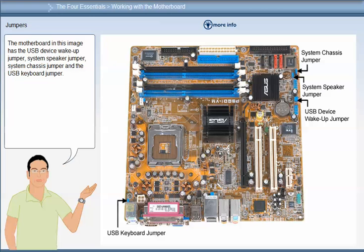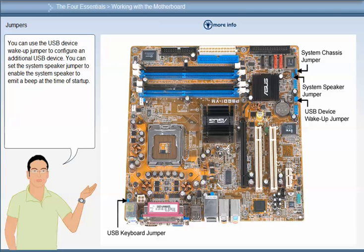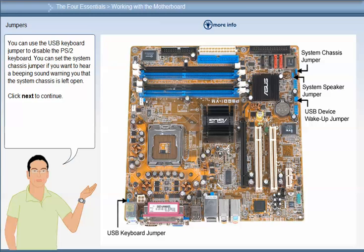The motherboard in this image has the USB device wake-up jumper, system speaker jumper, system chassis jumper and USB keyboard jumper. You can use the USB device wake-up jumper to configure an additional USB device. You can set the system speaker jumper to enable the system speaker to emit a beep at start-up. You can use the USB keyboard jumper to disable the PS2 keyboard. You can set the system chassis jumper if you want to hear a beeping sound warning you that the system chassis is left open.